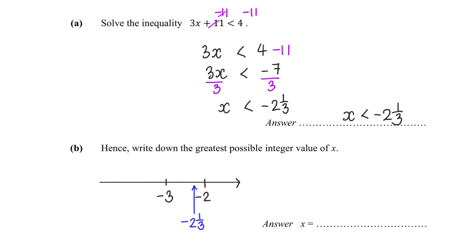And x is less than this, that means we don't equal to this. It must be less than this. So what is the greatest possible integer value? Yes, negative 3.